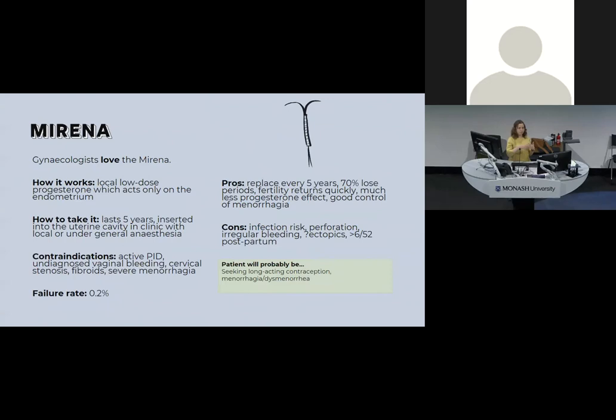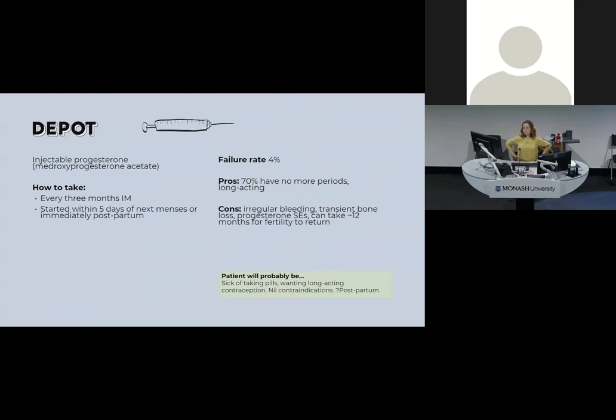The Depo injection is another progesterone-only option — intramuscular injection every three months. Failure rate is about 4%. Many women don't get periods on it, which is a benefit. Cons include irregular bleeding, transient bone loss, systemic progesterone side effects, and up to 12 months until fertility returns to normal afterwards. A typical patient might be sick of taking pills, wanting longer-acting contraception, and possibly postpartum.